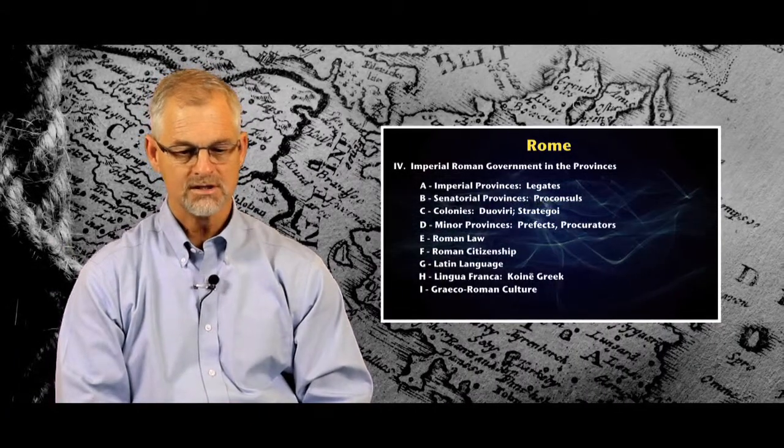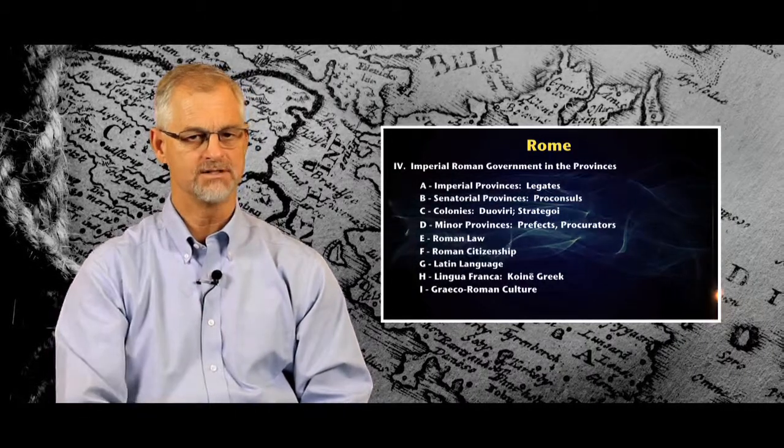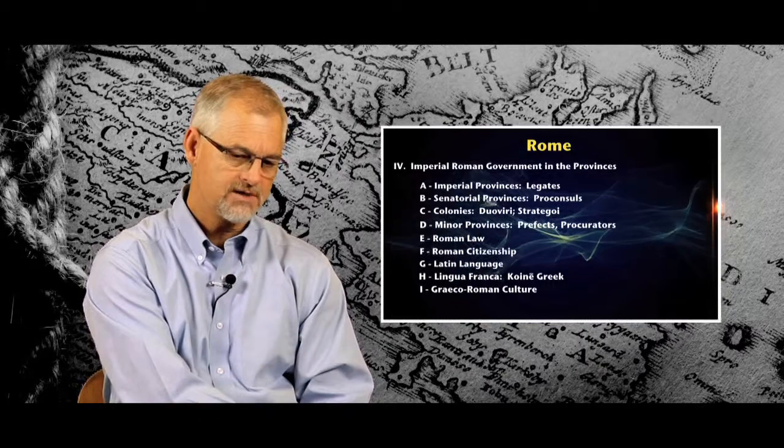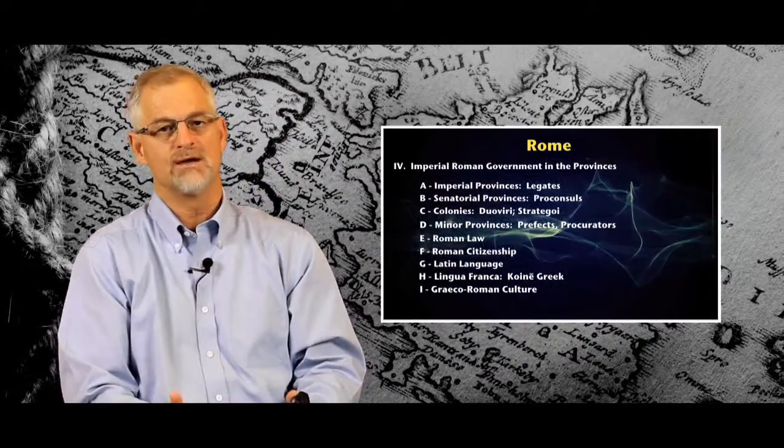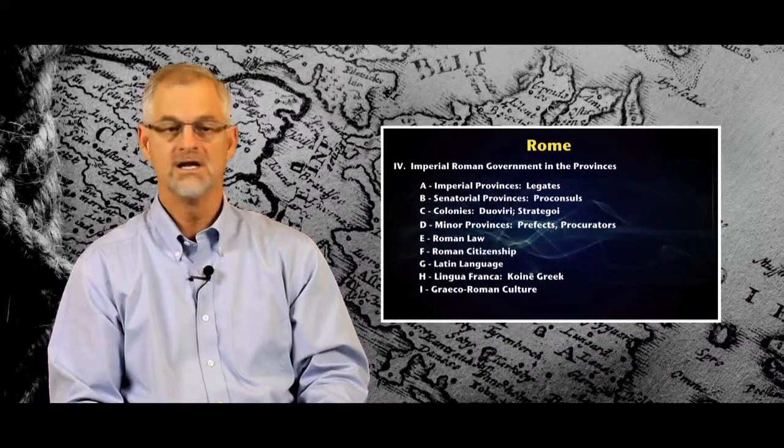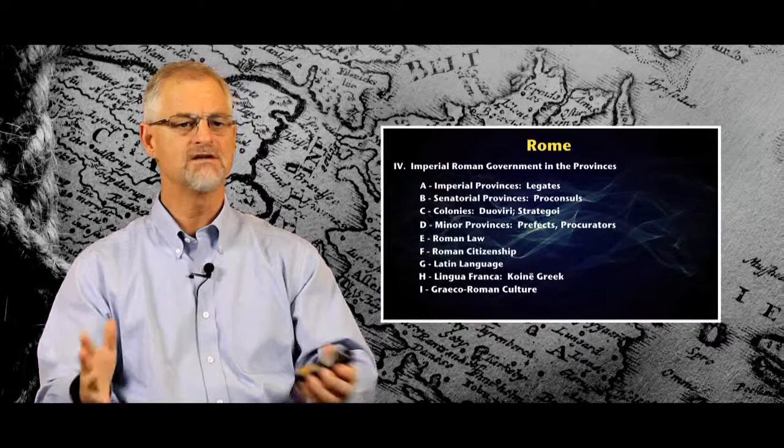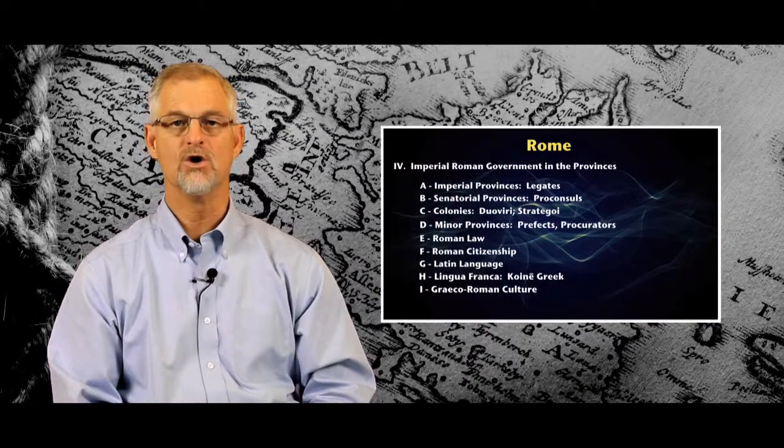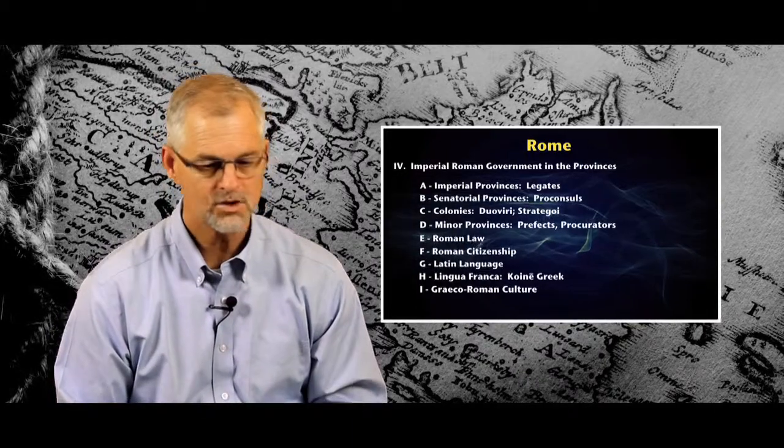Of course, the official language of the Roman Empire is Latin. But that's the language of government. It's also the language of the western part of the empire. But in the eastern part of the empire, and really throughout the empire, the trade language, the common language, the lingua franca, is Greek. Especially the Greek of the streets, the common Greek, which we know of as Koine Greek. And the New Testament is, in fact, written in Koine Greek.